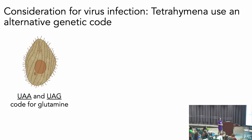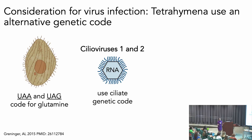Something really interesting about ciliates that's important for thinking about virus discovery is that they use an alternative genetic code. UAA and UAG actually code for glutamine instead of a stop codon. We would assume that a virus infecting these cells also needs to use this genetic code, and that's actually how the only two potential ciliate-infecting viruses have been discovered — through their use of the ciliate genetic code. This was discovered through metagenomic wastewater data: if you apply a standard genetic code you don't see any open reading frames, but if you apply this alternative genetic code, you see significant reading frames.